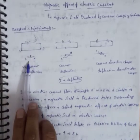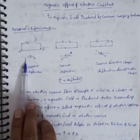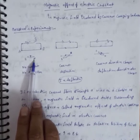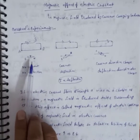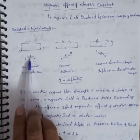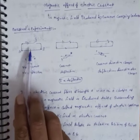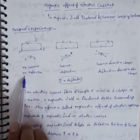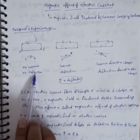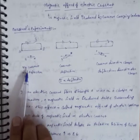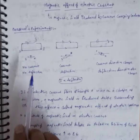When the switch is open, the circuit is not complete and there is no deflection in the needles of the compass. Jab isme koi current nahi hai, to compass ki needles mein koi deflection nahi hoti.